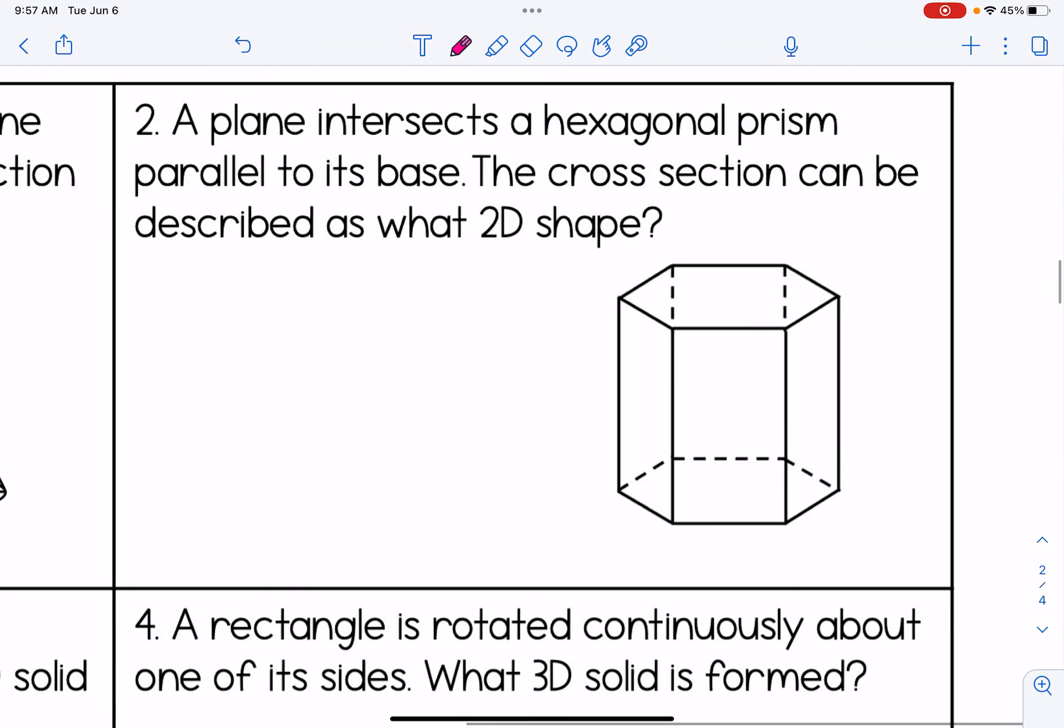Number two, a plane intersects a hexagonal prism parallel to its base. So now we're going, look at the base in the picture here, parallel. The cross-section can be described as what two-dimensional shape. So the hint from the previous page, if it's parallel to the base, it's the same shape as the base. A hexagonal prism has hexagon bases. So my answer would be hexagon here.